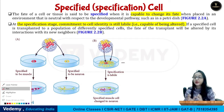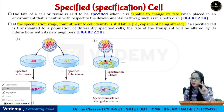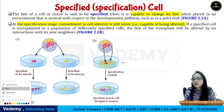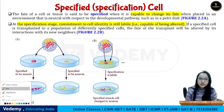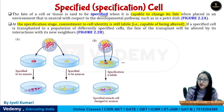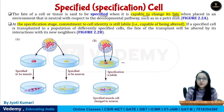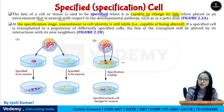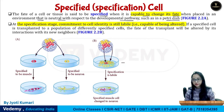Let's look at the Commitment of Specification and Determination. The fate of a cell or tissue is said to be specified when it is capable of maintaining its fate when placed in an environment that is neutral with respect to the developmental pathway, such as a Petri dish.